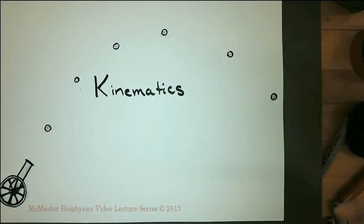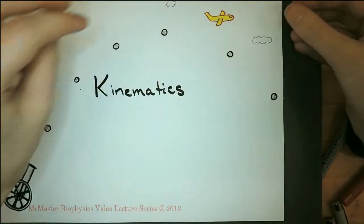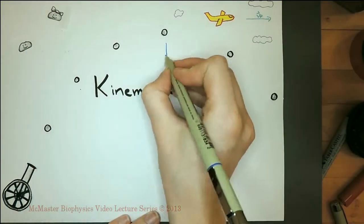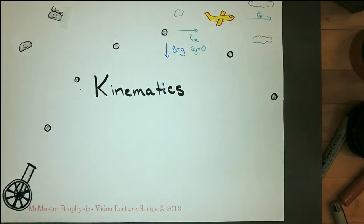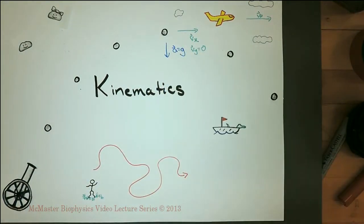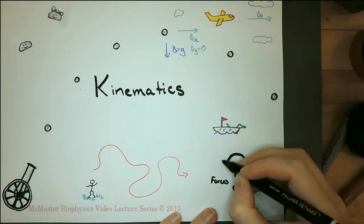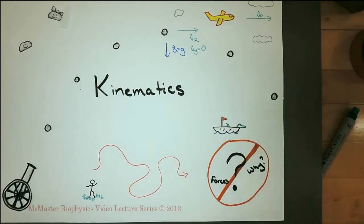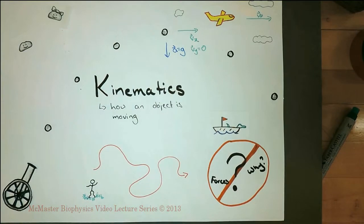Kinematics is the study of motion — specifically, how an object moves, rather than why an object moves. Kinematics is independent from the forces acting on an object; it only considers the movement of the object.